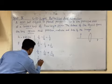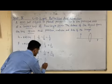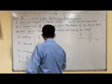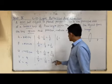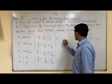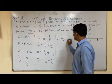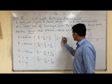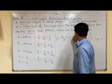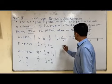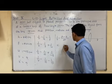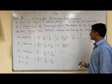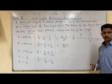So 1/v equals 1/10 minus 1/15. Taking the LCM as 30, we get 3 minus 2 over 30, which equals 1/30. Therefore v equals 30 cm, which is positive.